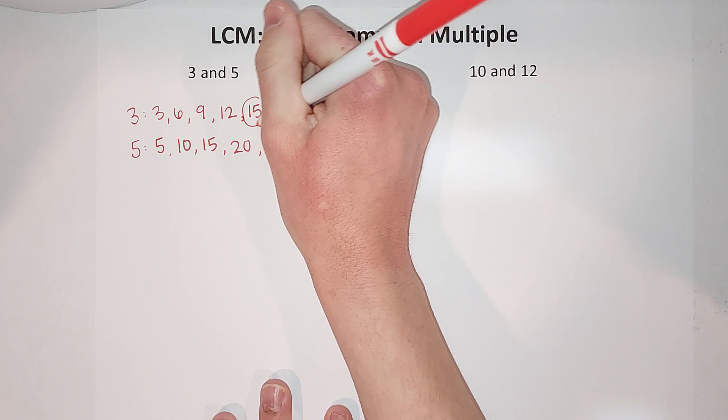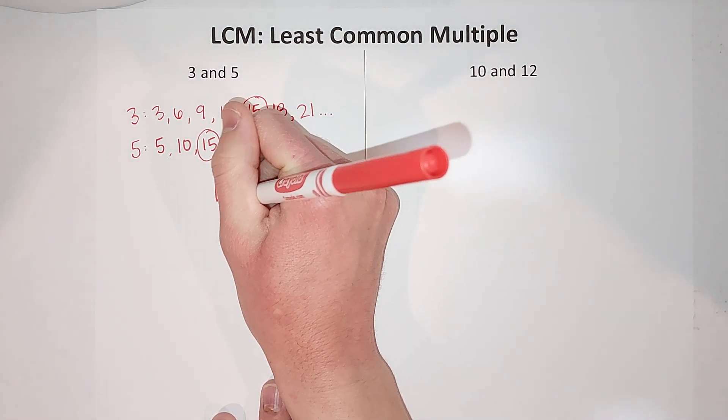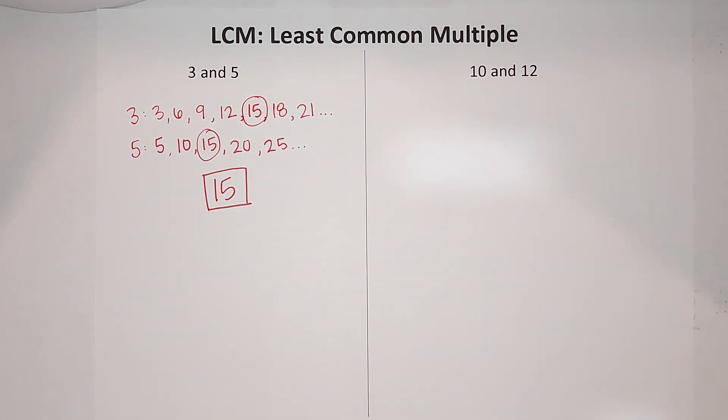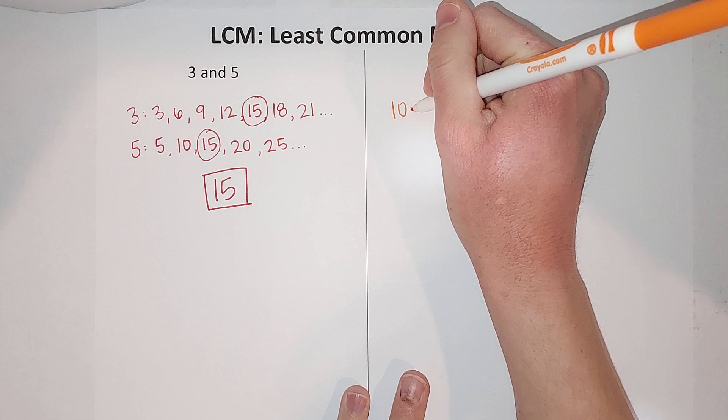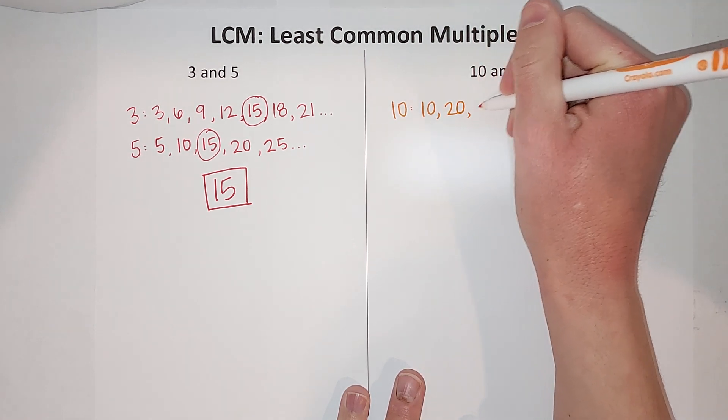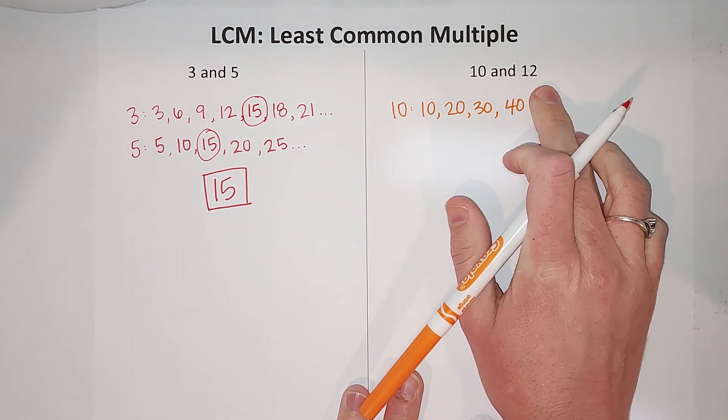It is 15. Least common multiple. All right, let's look at this one: 10 and 12. Multiples of 10, easy. You've been doing this since like kindergarten: 10, 20, 30, 40. I could keep going. And 12.